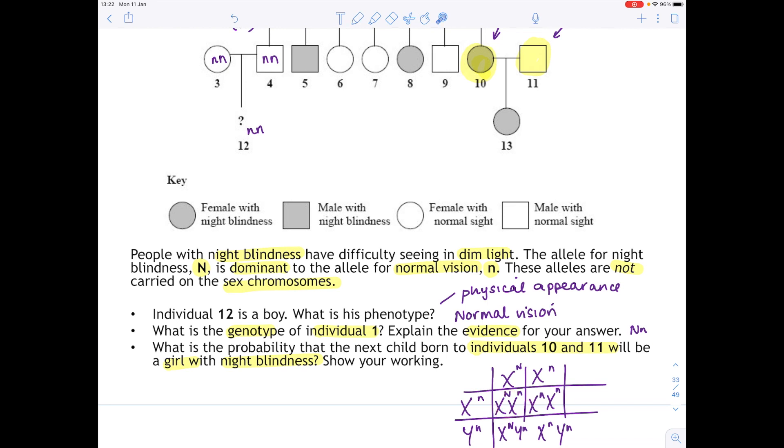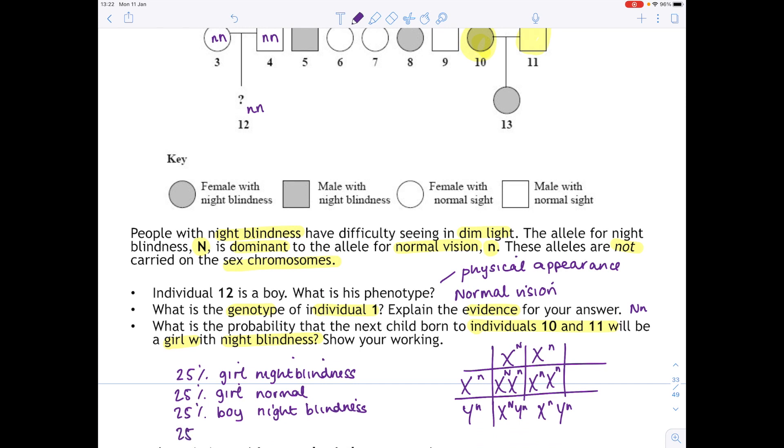So we know that this individual will be a girl with night blindness. This individual will be a girl with normal vision. This offspring will be a boy with night blindness. And then lastly, this individual will be a boy with normal vision.